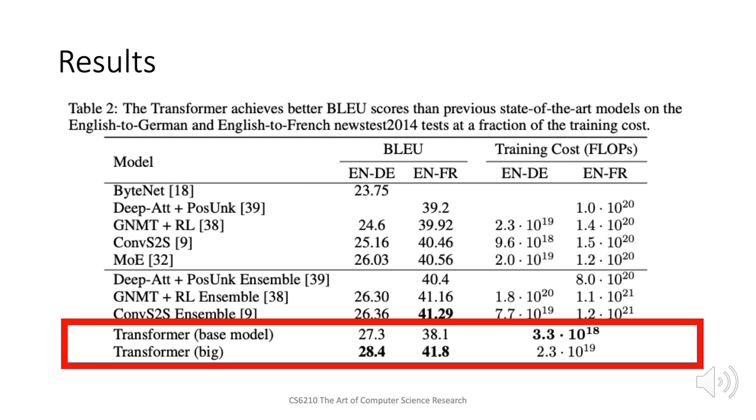As we can see, on English to German translation, the big model achieves a BLEU score of 28.4, which is the new state of the art. Also, on English to French tasks, the big model achieves a BLEU score of 41.8, which is the highest. The training cost of the base model is also reduced to almost one-fourth of the previous state-of-the-art models, which shows the competency of this transformer architecture.